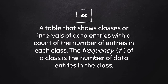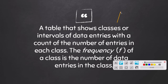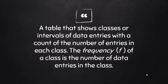We're going to start with the idea of a frequency table. A frequency table is simply a table that shows classes or intervals of data entries with a count of the number of entries in each class. The frequency is abbreviated F, or sometimes F(x), where F(x) means the frequency of the variable X — that is, the number of data entries in a given class.